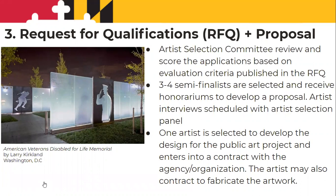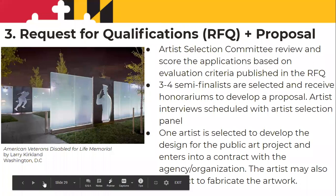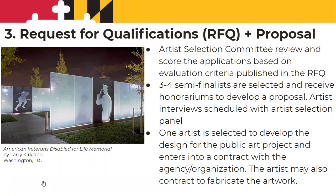This is an RFQ plus proposal process. The artist selection committee reviews and scores the applications. Three to four semi-finalists are selected and receive an honorarium to develop a proposal. The artists go away, develop their proposal, and then you schedule artist interviews with the artist selection committee. The artists may also present their proposal to the community, and then one artist is selected to develop the design for the project. That artist may also contract to fabricate the artwork. I highly recommend this process — it's a great way to field ideas and to pay artists for their time in developing a proposal.